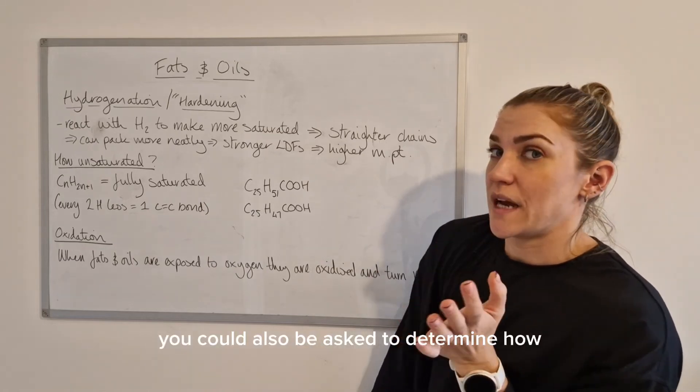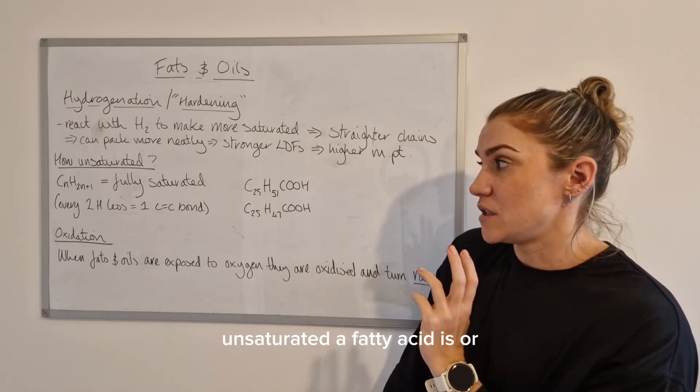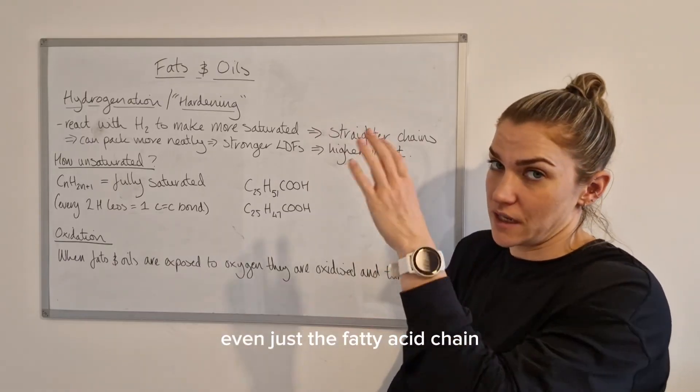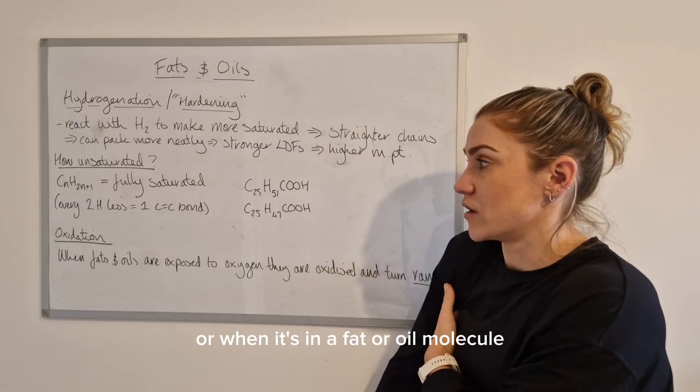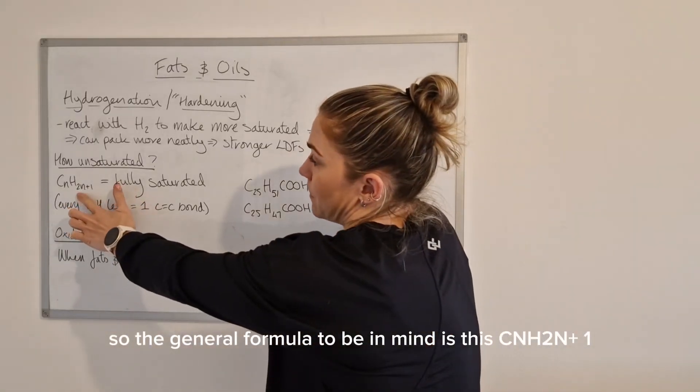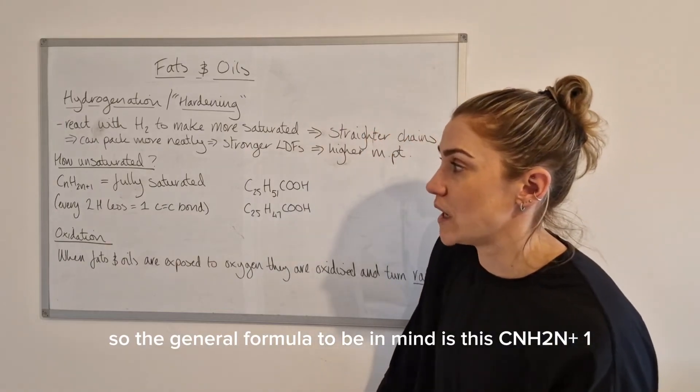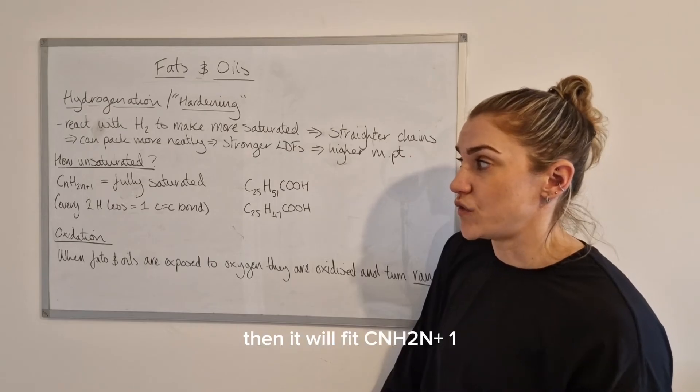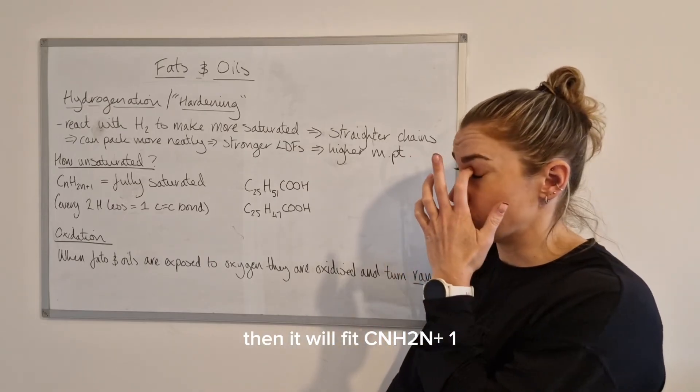For every double bond you need to break, you need one mole of hydrogen. You could also be asked to determine how unsaturated a fatty acid is, or even just the fatty acid chain if it's in a fat or oil molecule. The general formula to bear in mind is CnH2N+1.